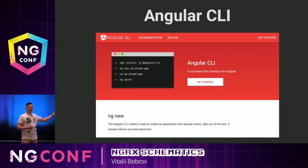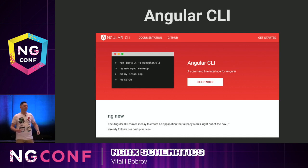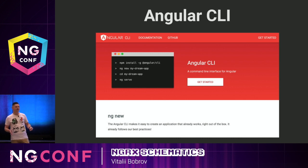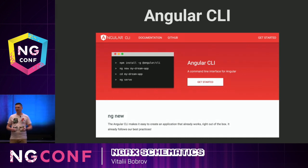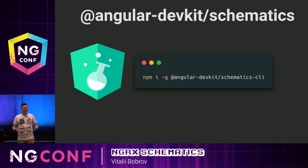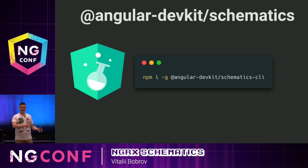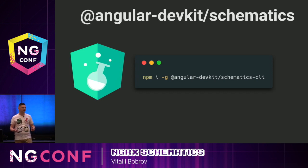And the Angular team provides us with this great tool called Angular CLI. You can create your whole application with it, and all needed pieces like components, directives, pipes, and services. And all this stuff was extracted from Angular CLI into a separate project called Schematics.